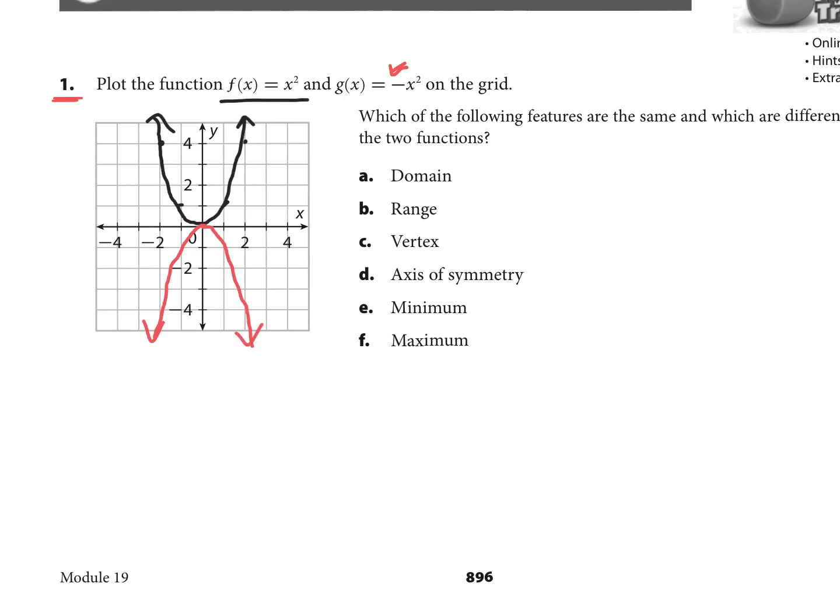When we talk about the features which ones are the same: the domain for all the functions we're doing in algebra one are all reals. The range does change. The range for our parent function is y ≥ 0, our range for our reflection is y ≤ 0 since it got reflected. The vertex is the same for both, vertex is at the point (0,0). Axis of symmetry is the same, x = 0, it's our y-axis.